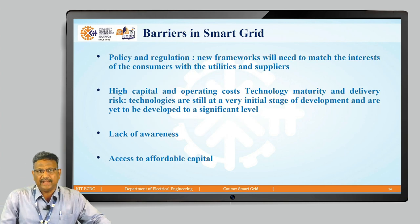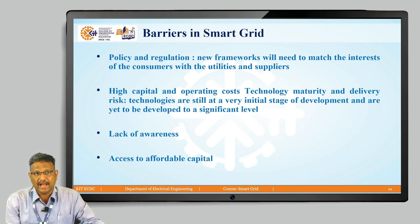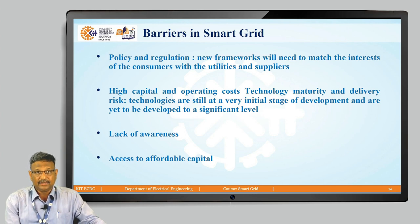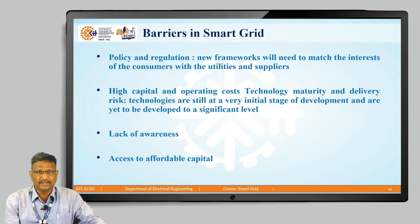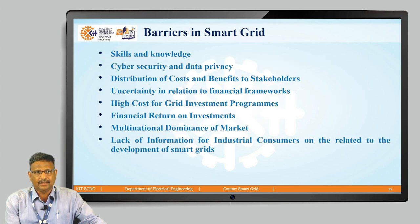There are some barriers to the smart grid as well. Policy and regulation is one barrier, as new frameworks need to match the interests of consumers with utilities and suppliers. High capital and operating costs, technology maturity, and delivery risks are concerns, as technologies are still at a very initial stage of development. There is also a lack of awareness among technical users and consumers, so wide publicity must be done, along with access to affordable capital.